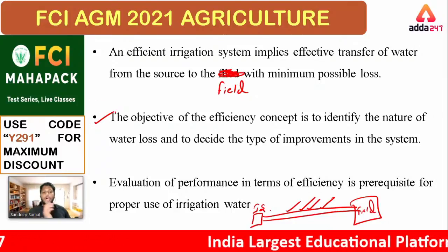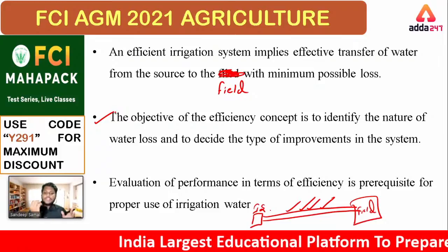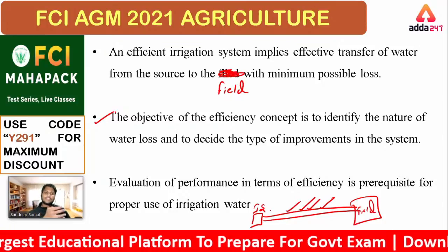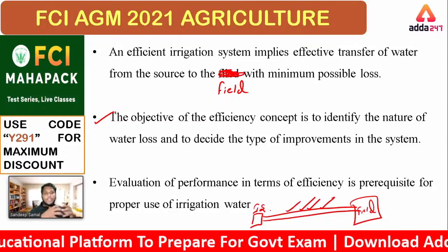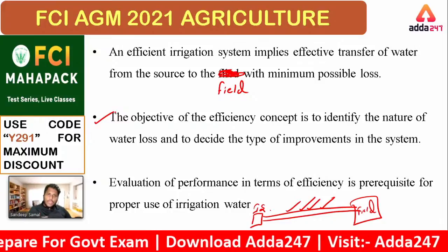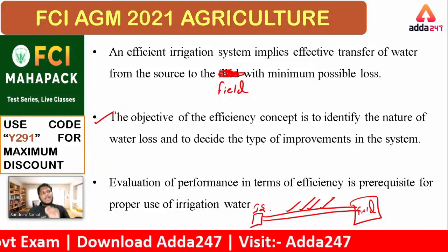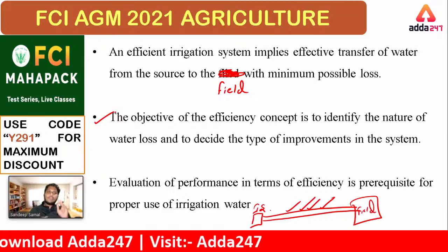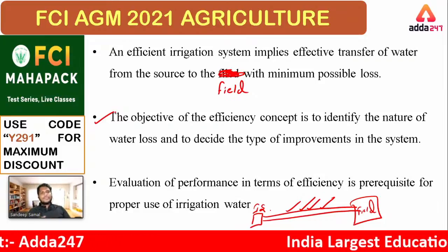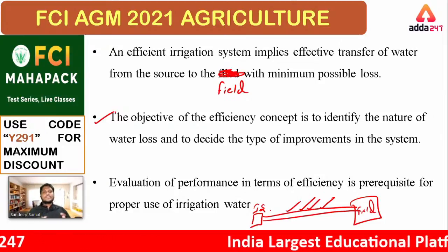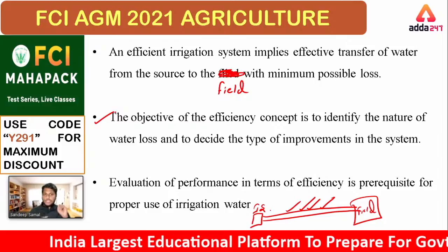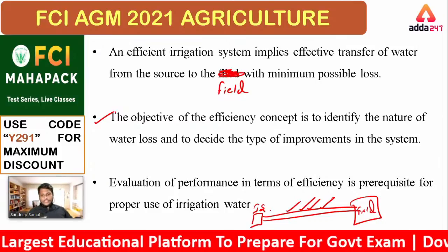The objective of the efficiency concept is to identify the nature of water loss and to decide the type of improvements in the system. What is the objective? It is to understand how the water is being lost when we are giving water in the field. Just like if you have 100 rupees and end up with 90, you need to know where the rest went. Similarly, we need to know what water is being lost in the system and in the process of transferring the water.